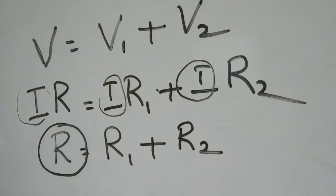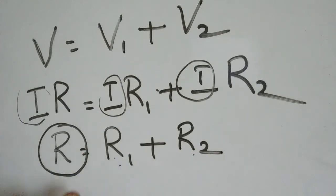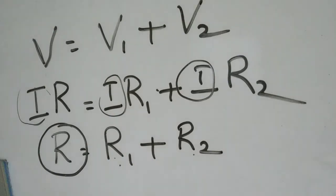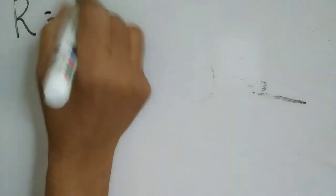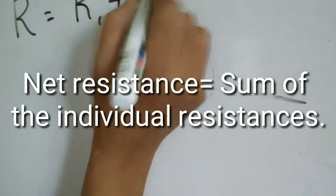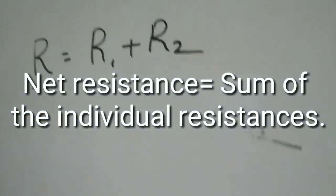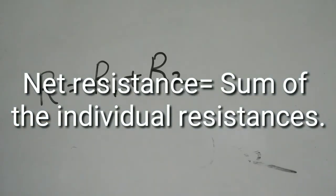Therefore R = R1 + R2. This R is called the net resistance or resultant resistance. When these two resistors together give some effect, that effect is given by a single resistor — that is the net resistance. So in a series circuit, the net resistance R is given by R1 + R2.